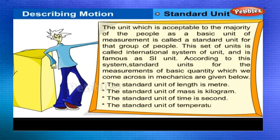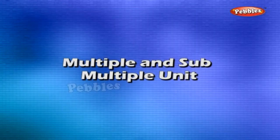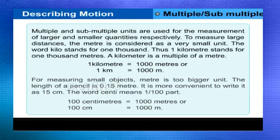Multiple and submultiple unit. Multiple and submultiple units are used for the measurement of larger and smaller quantities respectively. To measure large distances, the meter is considered as a very small unit. The word kilo stands for one thousand. Thus one kilometer stands for one thousand meters. A kilometer is a multiple of a meter. One kilometer is equal to one thousand meters, or 1 km = 1000 m.